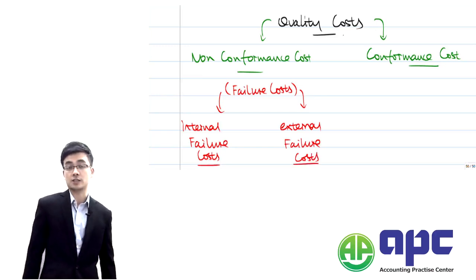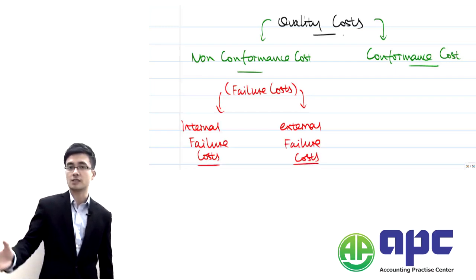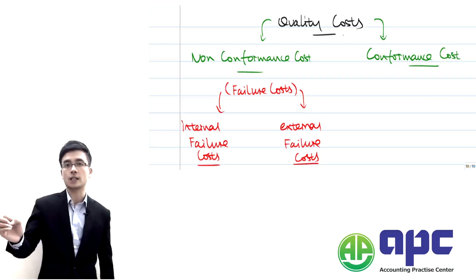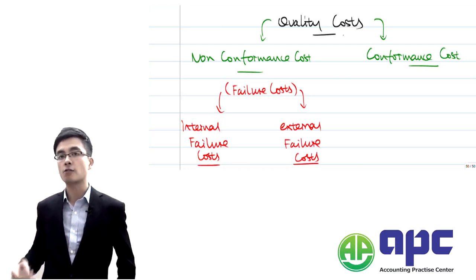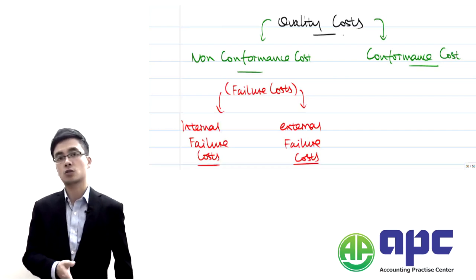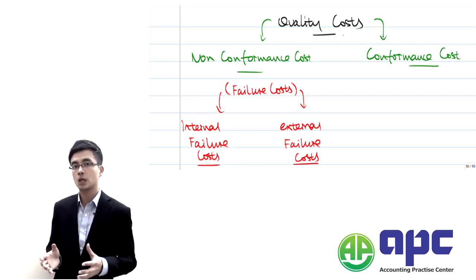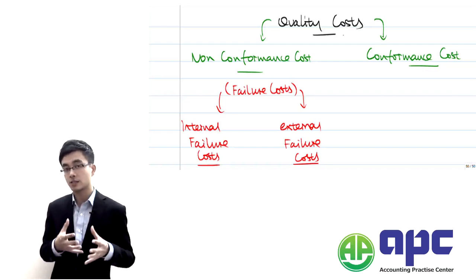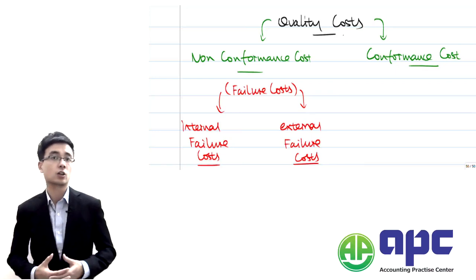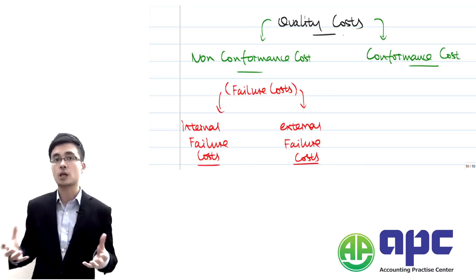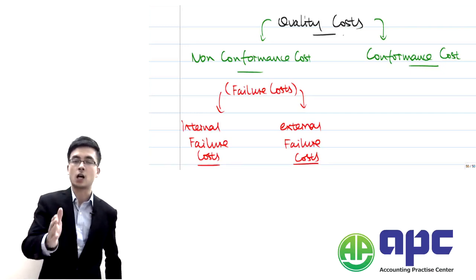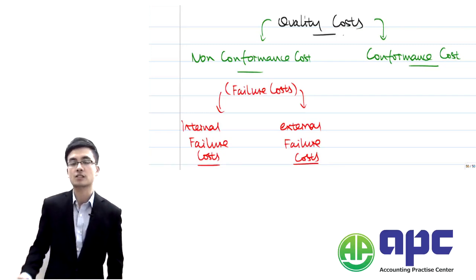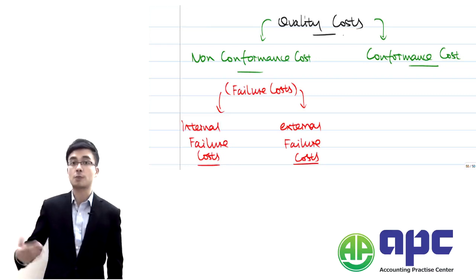Internal failure costs: before a product is finished and sent to the customer, we identify certain inefficiencies during the production process resulting in the product not meeting quality standards. If we find errors before sending to the customer, we have to fix them — that costs money. That's the internal failure cost. External failure costs means outside the organisation — after the customer has received goods and found mistakes, they send the product back and ask you to fix those errors. That is the external failure cost, and you have to spend money fixing it.